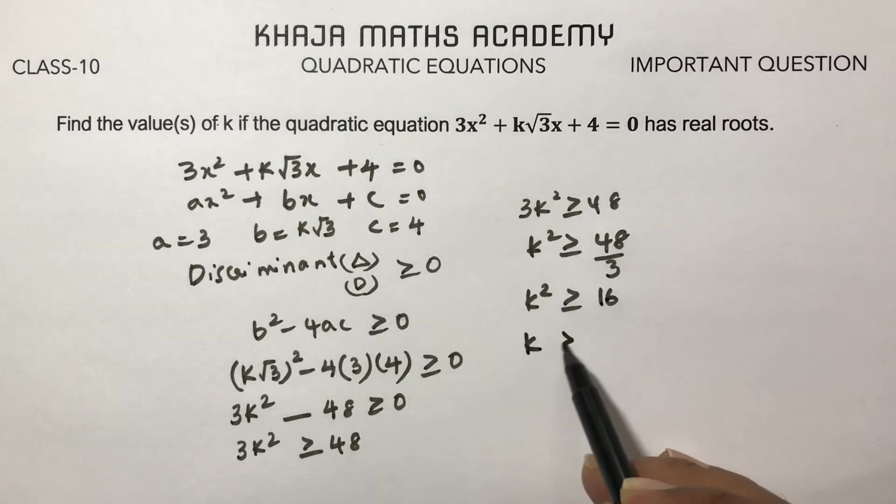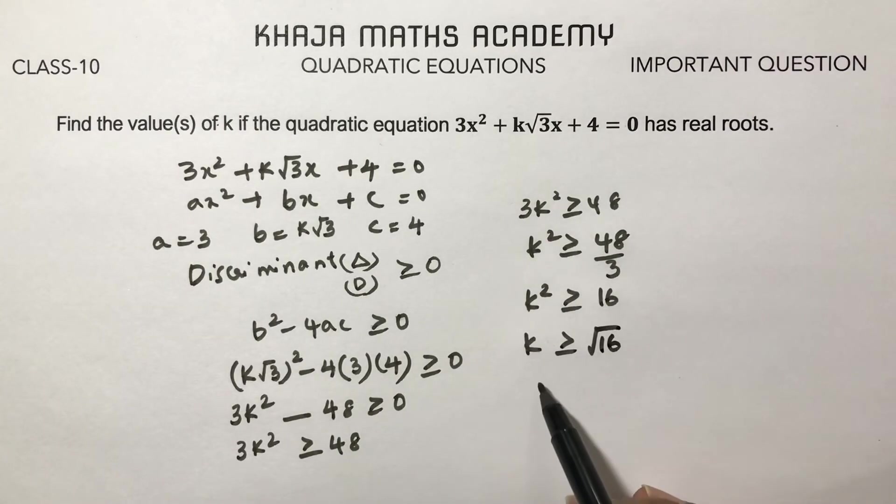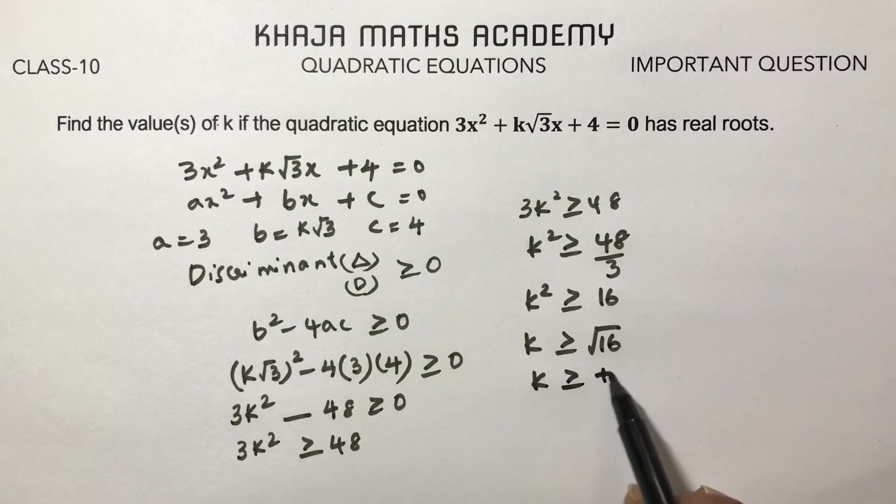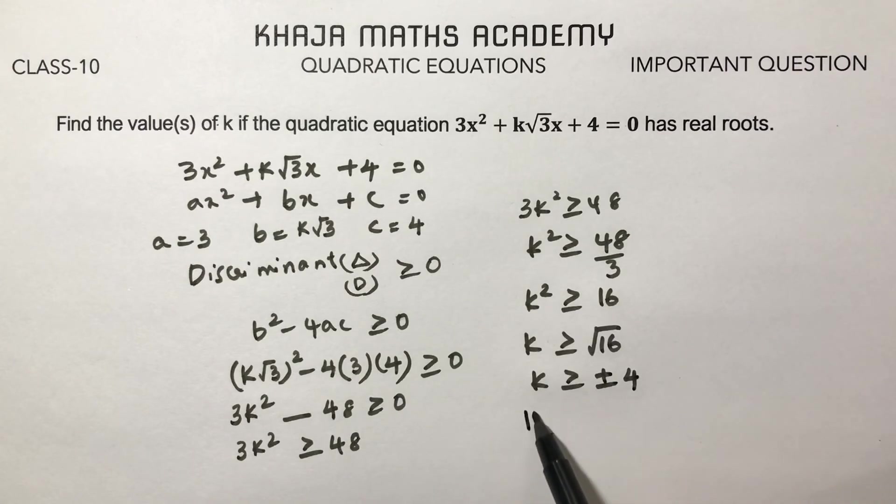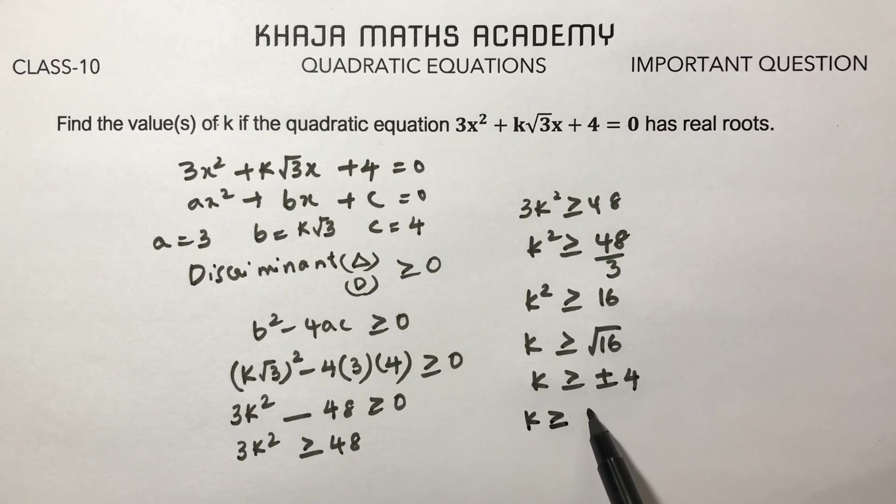Taking the square root, k ≥ √16, so k ≥ ±4. Therefore, k ≥ 4 or k ≤ -4.